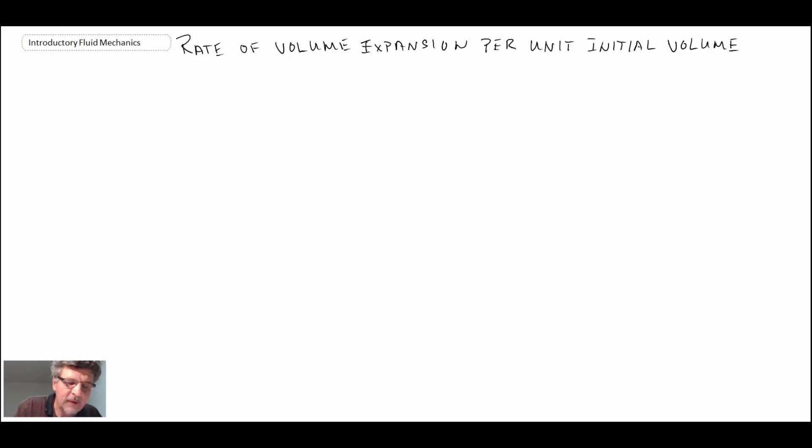With this one, we have 1 over V. In fluid mechanics, you'll notice we'll use a V with a line through it to denote volume. That would be rate of volume change, expansion or contraction with respect to time per unit initial. That's why we multiply it by 1 over V.